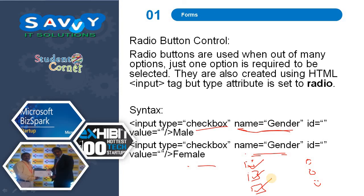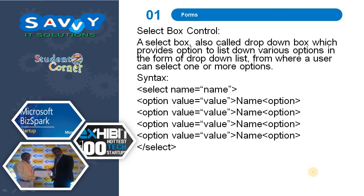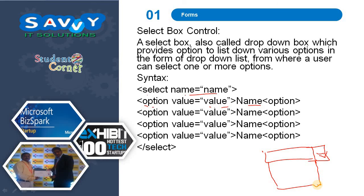Select box control: a select box, also called a drop-down box, provides options listed in the form of a drop-down list from which a user can select one or more options. Using the select tag with name, option, value, and name attributes. When clicking the drop-down, the list automatically appears.